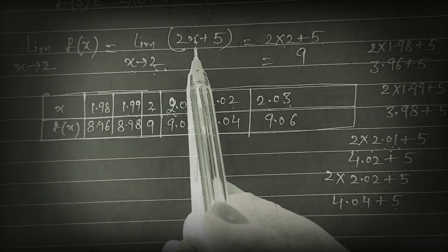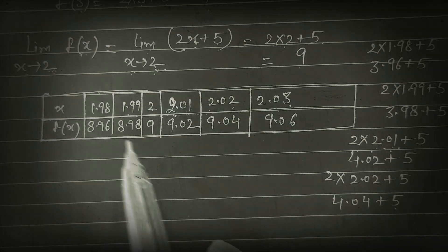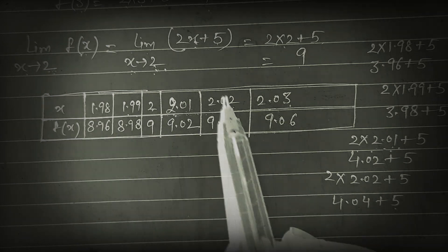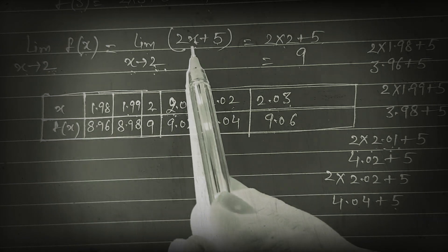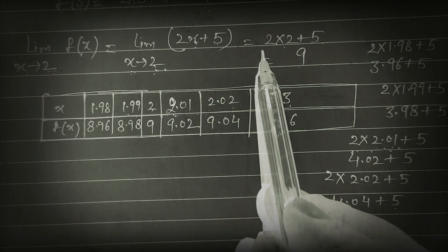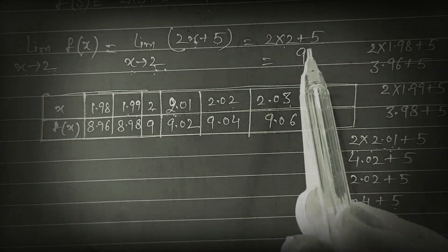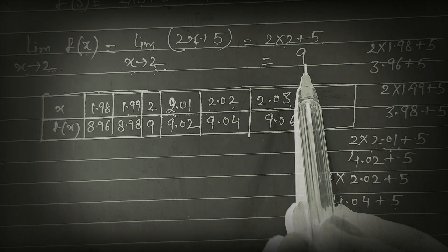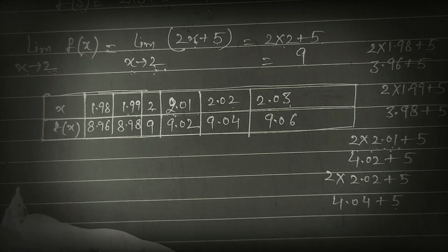So that means if you take limit x tends to 2 of 2x + 5, its value is 9. We can put directly here — no need to work out the limit separately. You can simply put x = 2: 2×2 + 5 = 9.